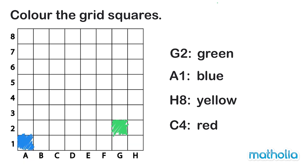Next is square H8. Can you point to H8? H8 is in column H, row 8, and I color it yellow.